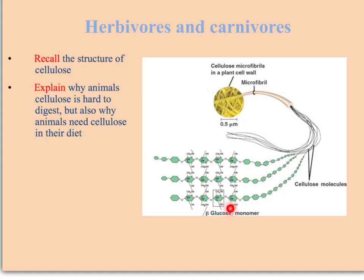The reason that's difficult for animals to digest is that animals don't produce the enzyme that can hydrolyse that beta-1 to 4 bond. Even though animals can't digest cellulose on their own, they still need it in their diet because it forms fibre, which gives the peristalsis of the gut something to work on, and moves the waste food through the gut so it can be excreted as faeces.